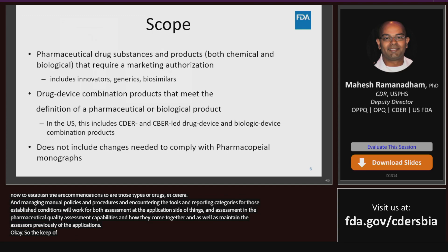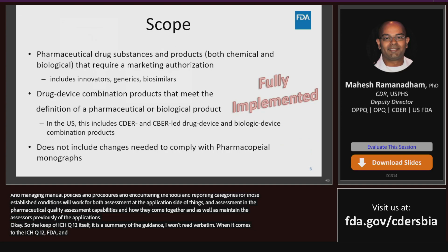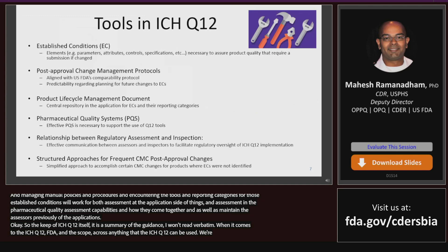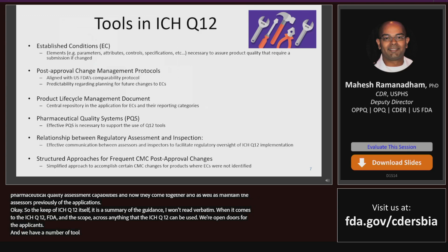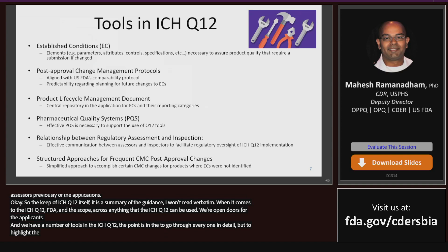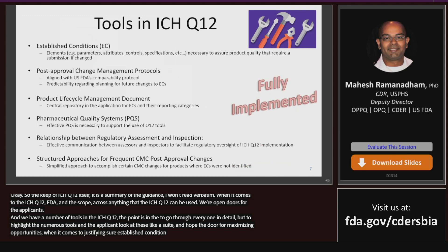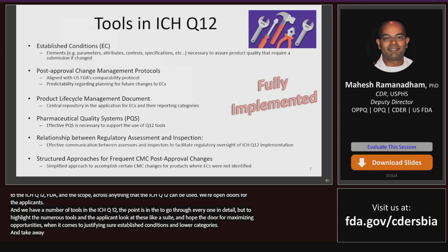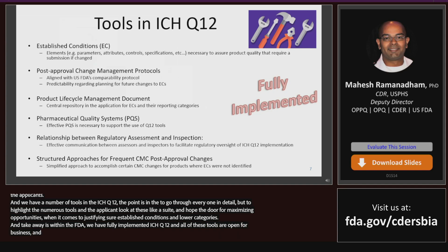When it comes to ICH Q12 and the FDA, we've had no limitations on scope — we are fully implemented across anything that Q12 can be deployed to per the guidance. We have a number of tools in ICH Q12, and the point is that applicants should really be looking at these as a suite — how to utilize all of these in conjunction to the best of their ability to really open the door for maximum opportunities when it comes to justifying fewer established conditions and lower reporting categories. Within FDA, we have fully implemented ICH Q12, so all of these tools are open for business.